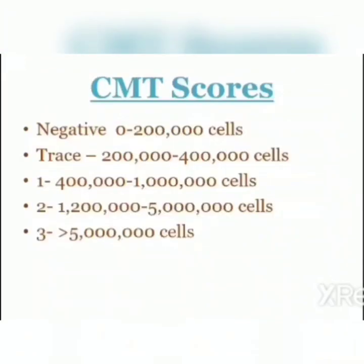CMT scores: If negative, the number of leukocyte cells varies from 0 to 2 lakh cells. If there is a condition of trace mastitis, cells vary from 2 lakh to 4 lakh cells. If mastitis has persisted for more than 2 weeks, cells range from 12 lakh to 50 lakh cells.